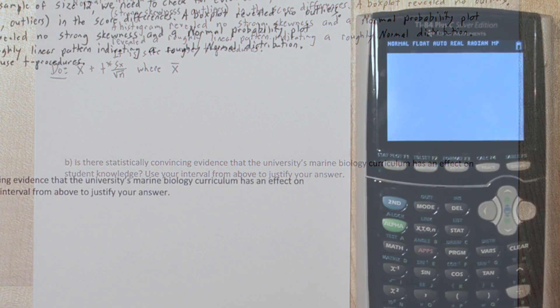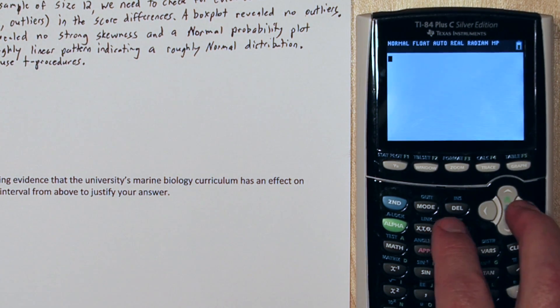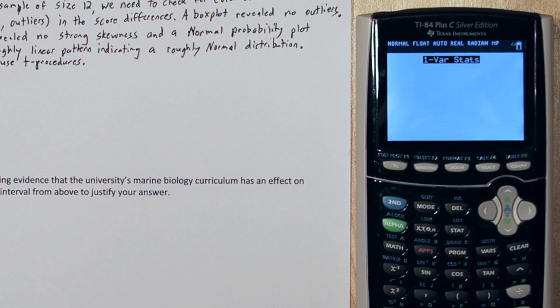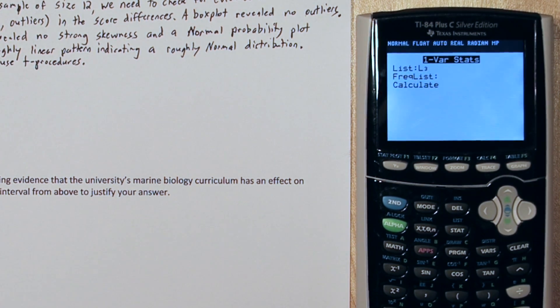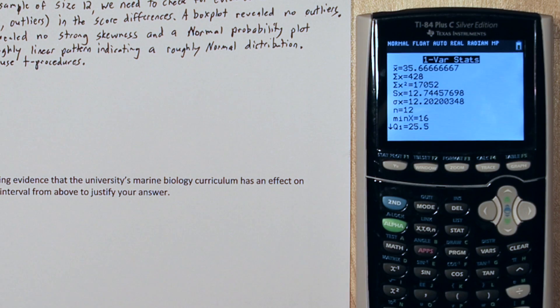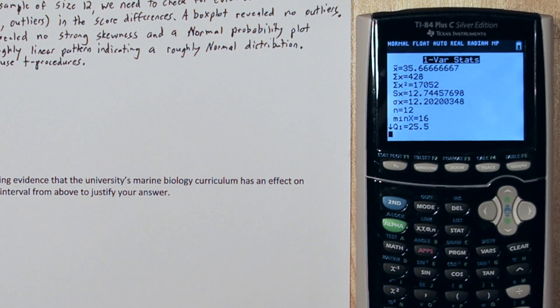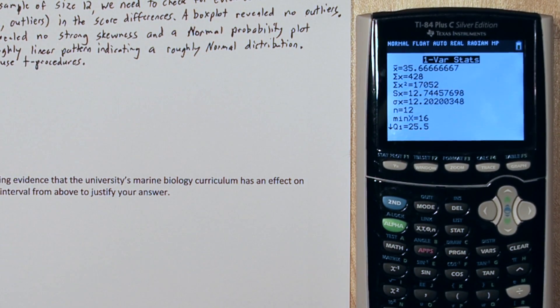Here's how we're going to get it. We already have our differences in scores stored in list 3. So, if we press the stat button, go over to calculate, and press enter on one var stats. We're going to change the list to list 3 by pressing 2nd and the number 3. When we go down to calculate and press enter, here's all the data we need. The first piece of data is the sample mean, and s sub x right down there is the sample standard deviation. Also, n is 12, but we know that from the stem of the problem. So, let's write down the information we just got.